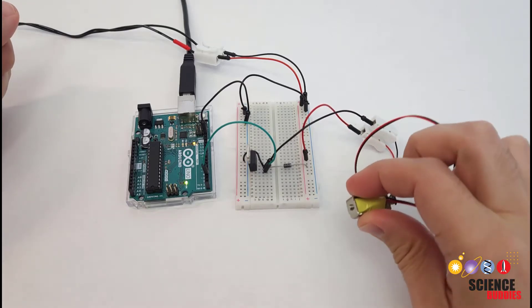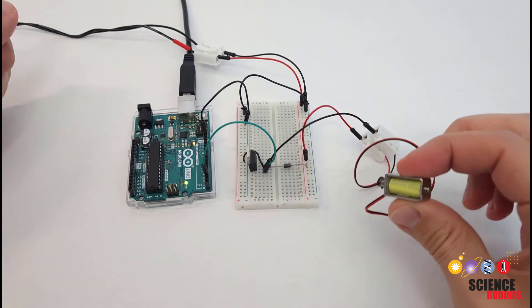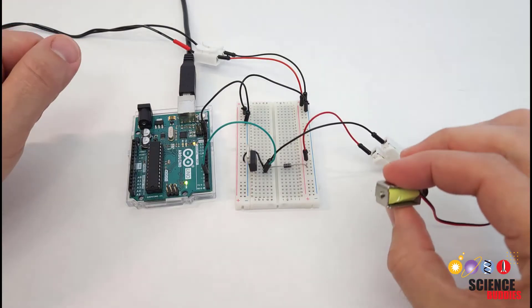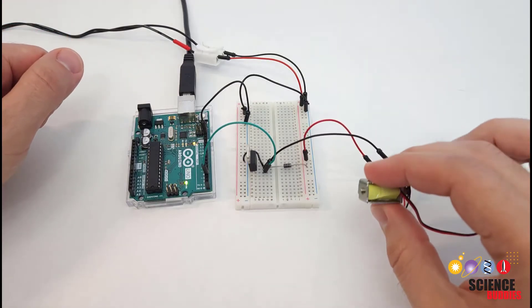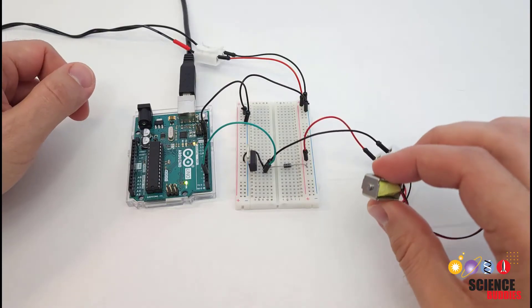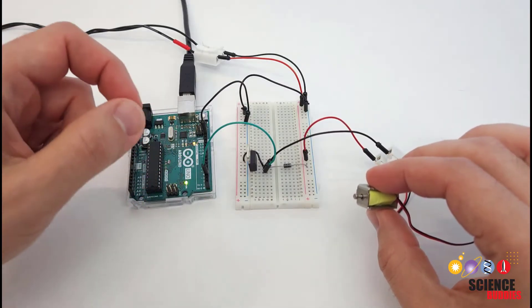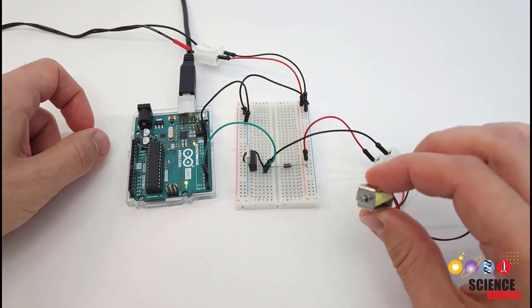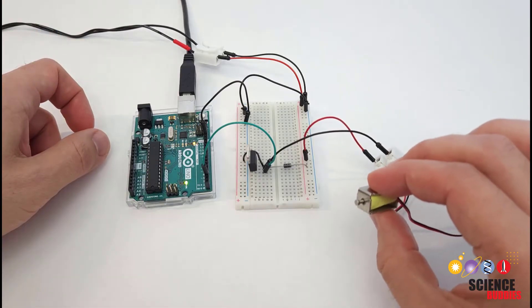In this video, I will show you how to use a solenoid with an Arduino. Unlike motors that provide rotational motion, solenoids provide linear or back and forth motion. So they are useful if you need to push or pull on something or if you want linear actuation without needing an additional mechanism to convert the rotational motion of a motor to straight line back and forth motion.